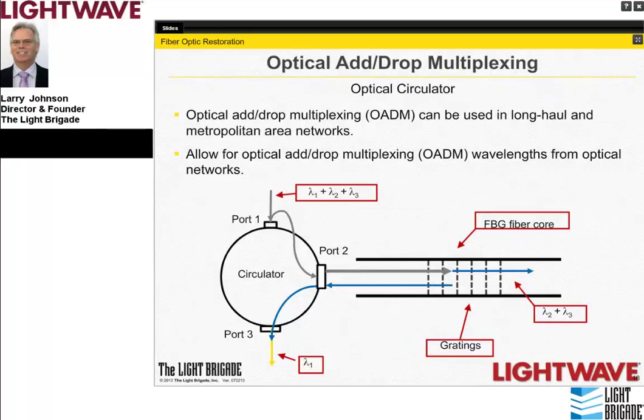Optical add-drop multiplexing combines a fiber Bragg grating with an optical circulator. The optical circulator uses Faraday rotators, beam displacers, and wave plates so that signals entering port 1 exit port 2, and signals entering port 2 from the opposite direction exit port 3. A fiber Bragg grating terminated to the circulator reflects a specified channel, which is then dropped at port 3. That freed channel can be re-added by a second optical circulator: an upstream signal enters port 3, routes to port 2, then back down the fiber. This technique is used primarily in long-haul and ROADM systems.